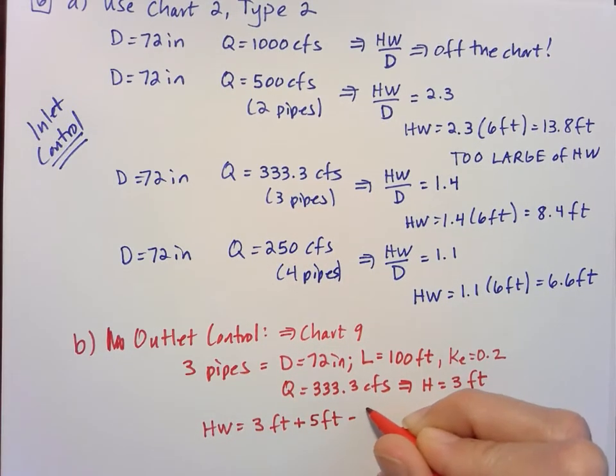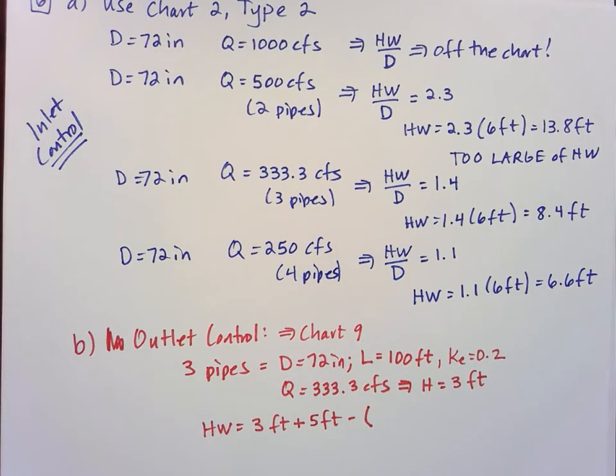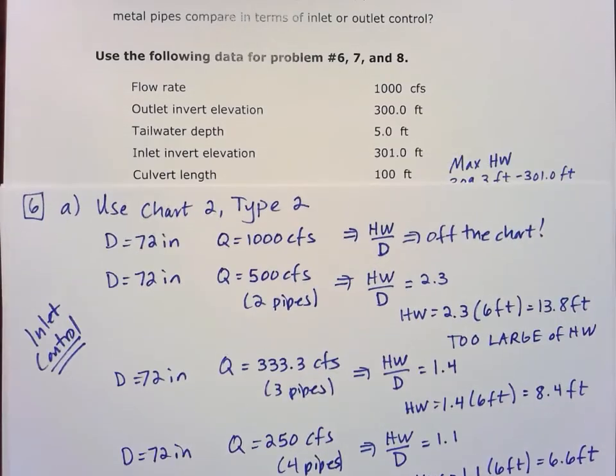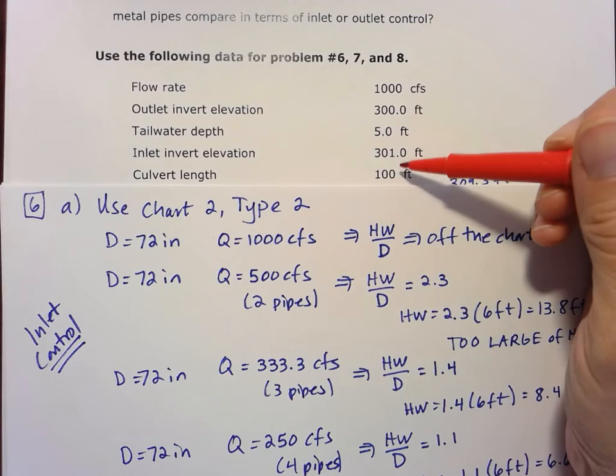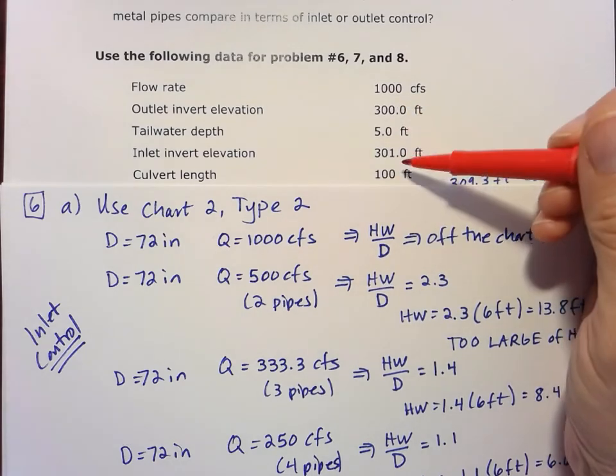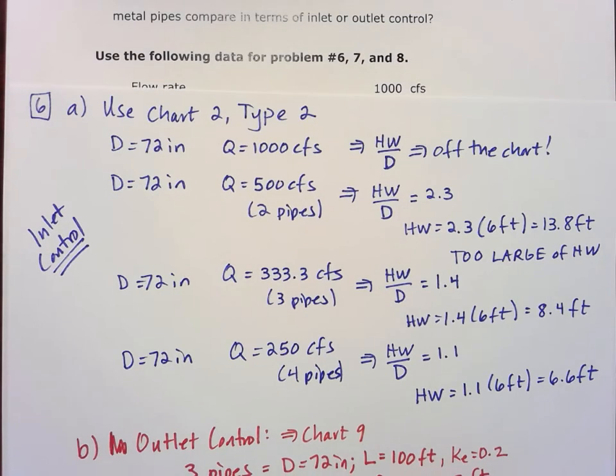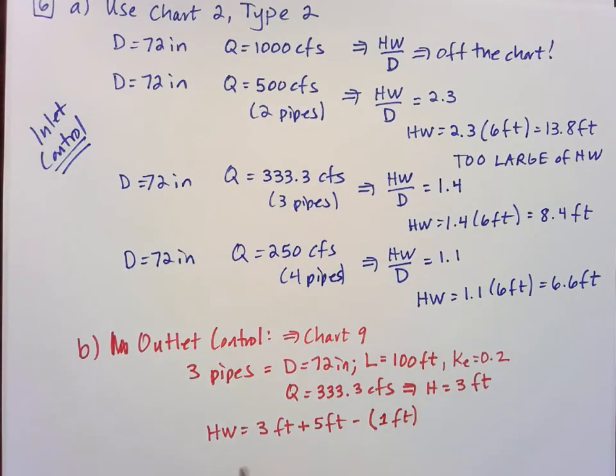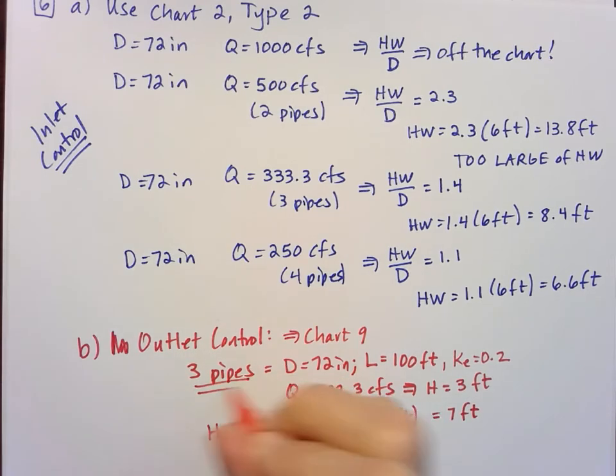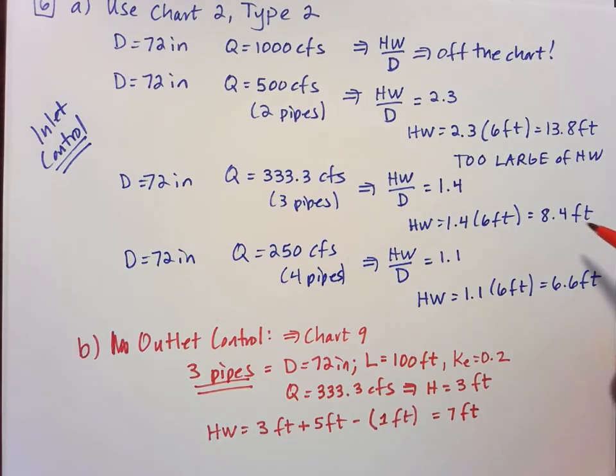And then we have to subtract that slope times length. But we've proven from looking at other problems that that's just going to be the same thing as the difference in the heights here. So our inlet and outlet invert elevations are just one foot. So we're going to subtract one foot from that depth there. And so we get three plus five is eight minus one, seven feet for the head water for the outlet control for three pipes. So in that case, inlet control for three pipes is still greater. So inlet would govern for the three pipe scenario.